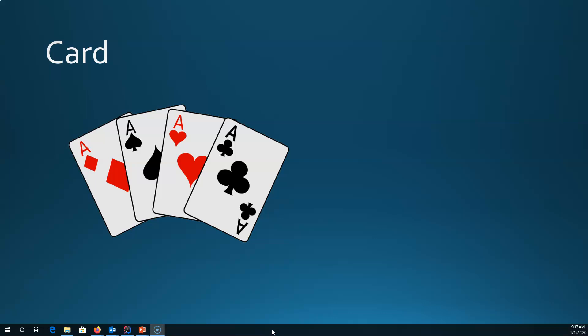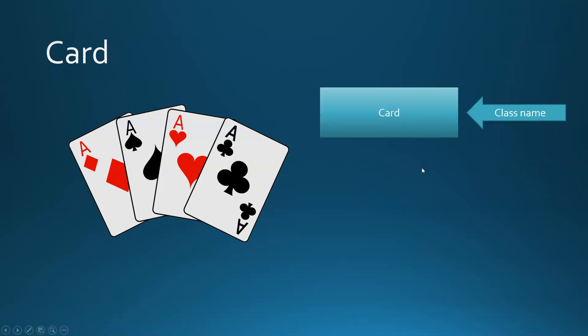Whenever you're designing a class, the very first thing you need to do is decide what's the name for my class. In this case I look at the objects in front of me and they are all instances of cards, so the name I chose for my class is Card. On the right-hand side of the screen we're building a class diagram, defined in the Unified Modeling Language, and the first thing we have is our class name.